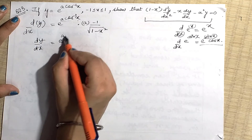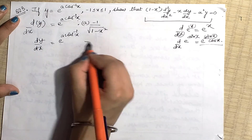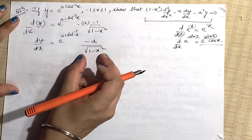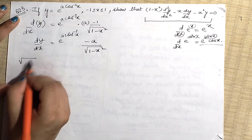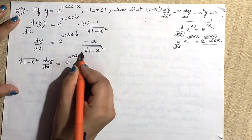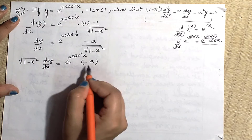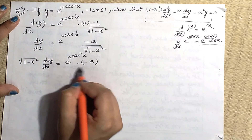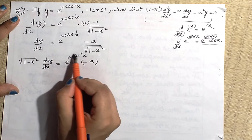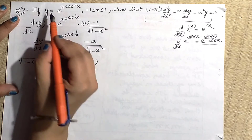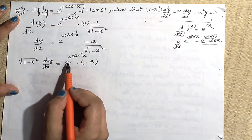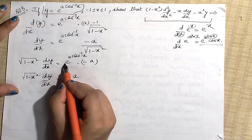So dy/dx = e^(a cos⁻¹x) · (−a/√(1−x²)). Now, notice that e^(a cos⁻¹x) is exactly y. So we can write: dy/dx = y · (−a/√(1−x²)), or equivalently √(1−x²) · dy/dx = −ay. This is the first derivative equation we have established.